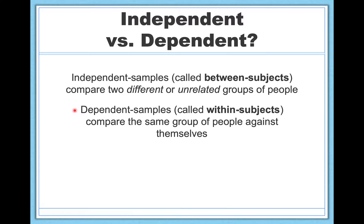Dependent Samples T-Tests, in contrast, are basically used when you want to compare the same group of people against themselves. This is called a within-subjects design because you're measuring people along some dimension, getting a baseline score, giving them a treatment, and then measuring them again to see if that treatment made a difference. Keep in mind when it's appropriate to use an Independent Samples T-Test versus a Dependent Samples T-Test.